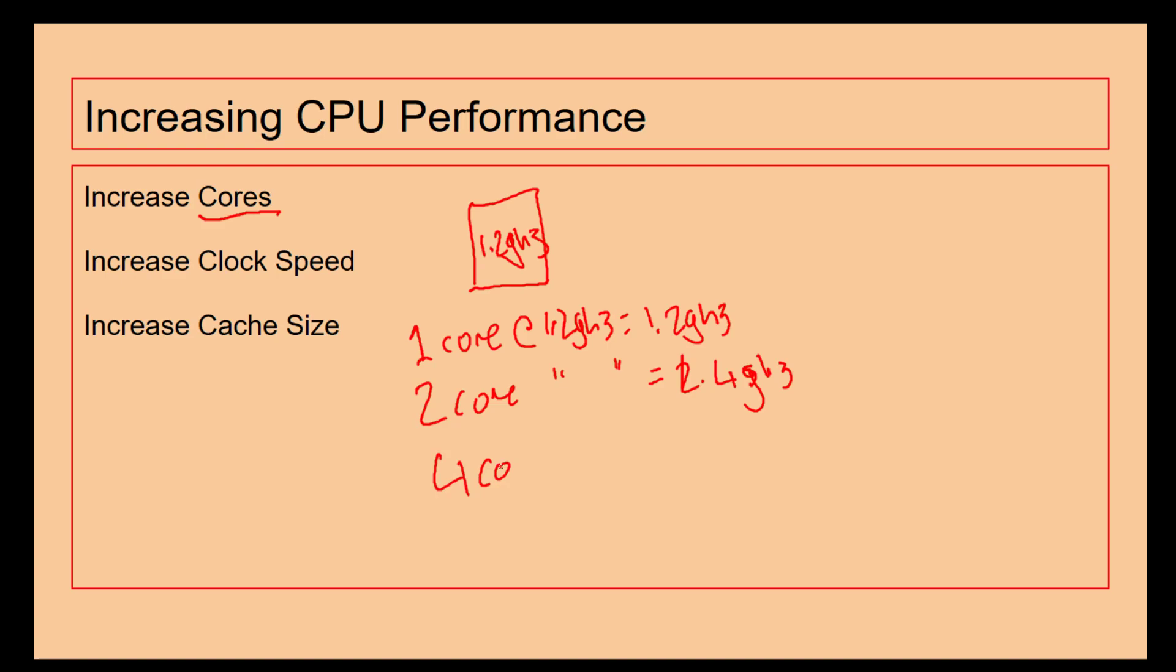If we've got a quad core, that is going to give us 4.8 gigahertz. And then we can get six core and commonly now in phones you can get eight core. We can see that is going to just keep increasing. So the more cores, the greater the clock speed, which means the more instructions can be processed. And if we've got four cores, we can say this instruction and this part is going to be done there, this part's going to be done there, that part's going to be done over there. So we can share the load across the cores.